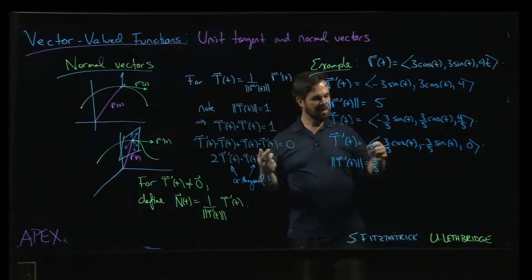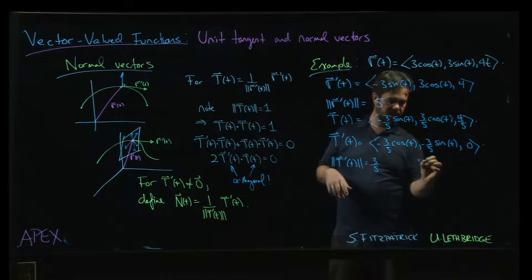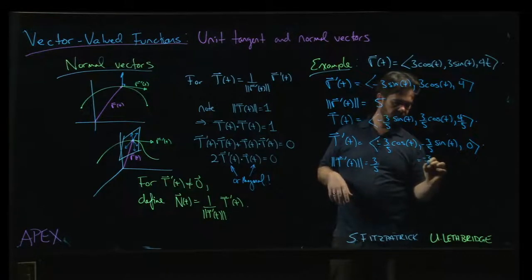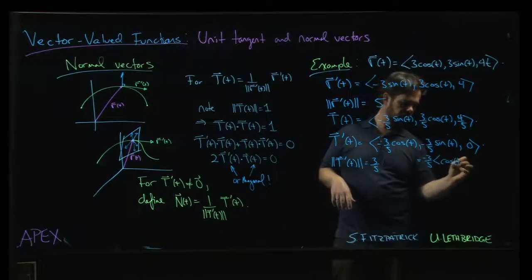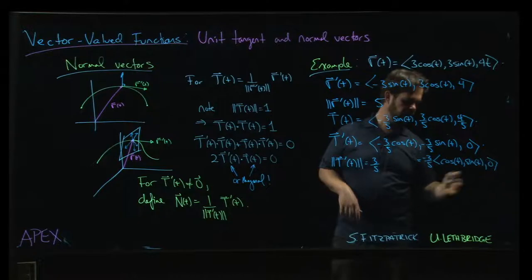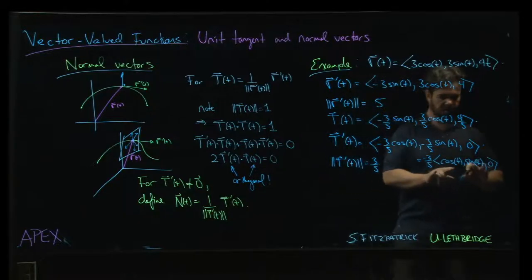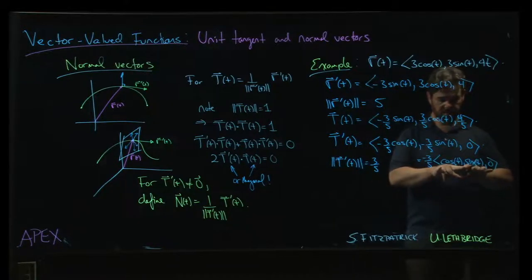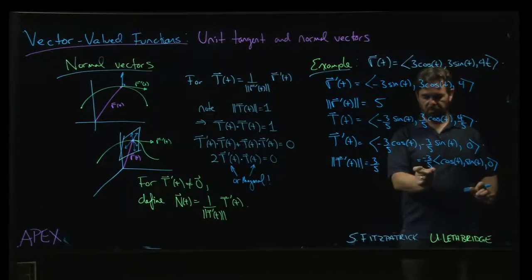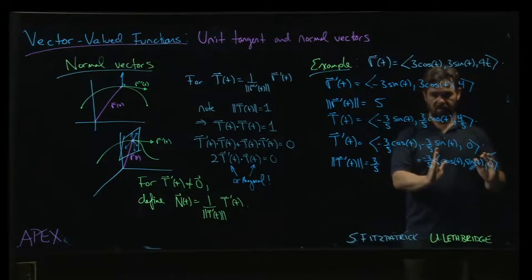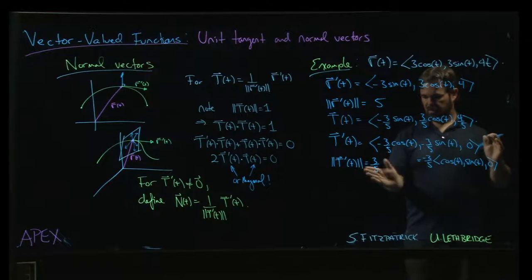Why is it 3 over 5? Because if I take the minus 3 over 5 out, I'm left with cosine t, sine t and 0. I know that this is a unit vector. And remember the basic property of magnitudes: if you have a scalar multiple out front, the magnitude of the whole thing is absolute value of the scalar times the magnitude of the vector.